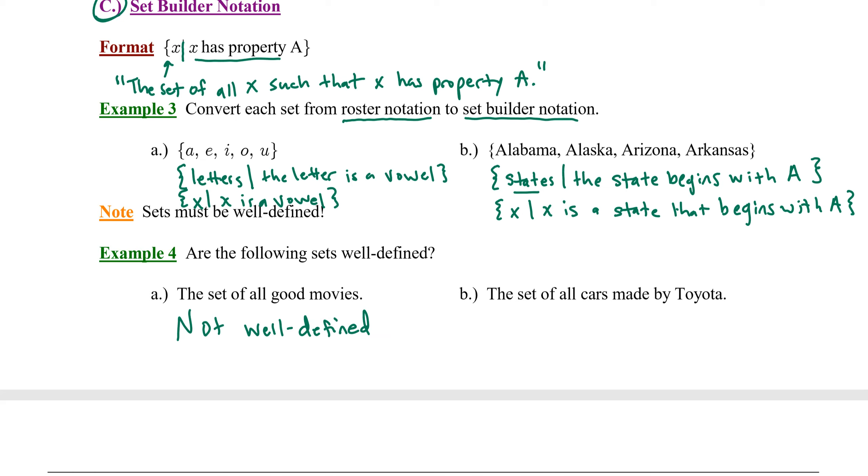Example B. The set of all cars made by Toyota. Well, if we do a little bit of research, we could find out every single car ever made by Toyota, and we could make a list. So this one is well defined.